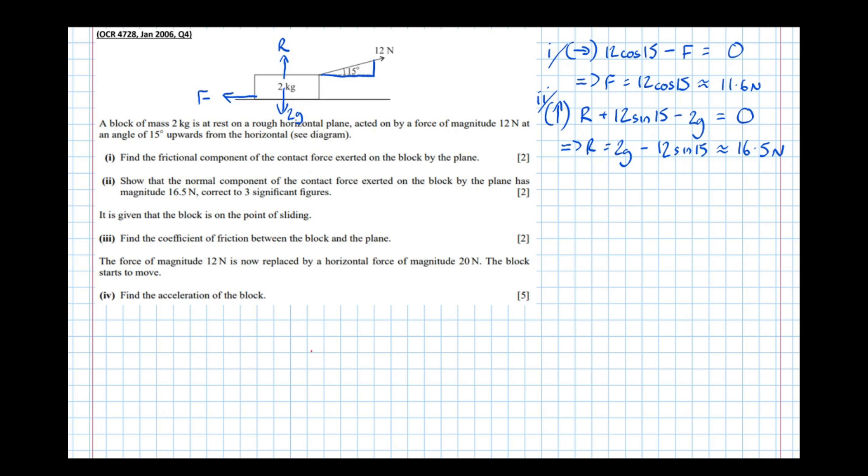And just breaking away from the question for a second. There's a common misconception that the friction equals μR. The formula actually is F is less than or equal to μR. And the reason for that is, just imagine yourself putting your hand on the table. If you push down, the normal reaction is going to be quite big. That means the friction is going to be massive. But if that's the case, the table should be pulling your hand forward. If there's that friction acting, it should be pulling your hand forward. But it doesn't.